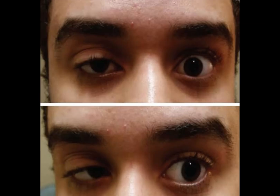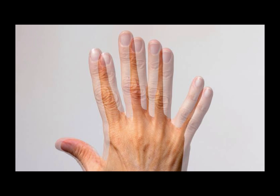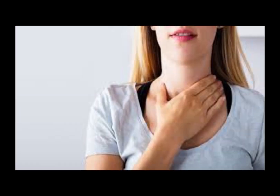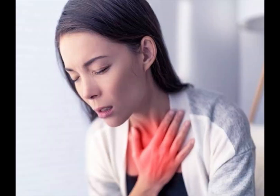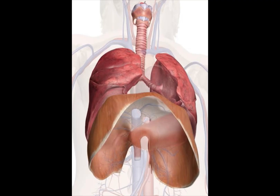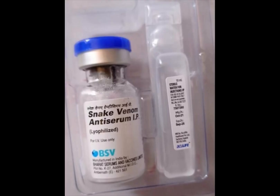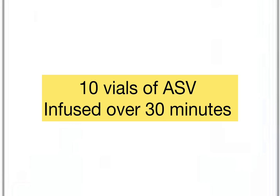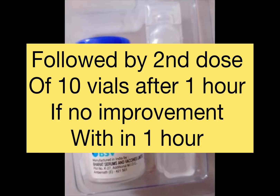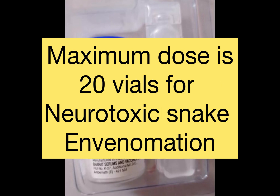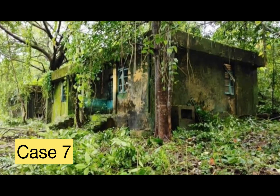The first sign of neurotoxic snake envenomation is ptosis — drooping of eyelids — followed by diplopia, then dysarthria and dysphonia, followed by dyspnea and dysphagia, and finally paralysis of intercostal and skeletal muscles in a descending manner. For neuroparalytic envenomation, start with 10 vials of ASV infused over 30 minutes, followed by a second dose of 10 vials after one hour if there is no clinical improvement. Maximum dose is 20 vials for neurotoxic envenomation.